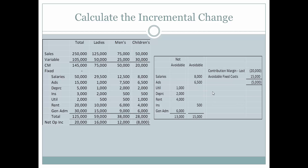To look at this on an incremental basis, we would look at the contribution margin lost. If these sales and the associated variable expenses are eliminated, the contribution margin that would be lost would be $20,000. From that, we can deduct the avoidable fixed costs of $15,000 — that is the salaries, the ads, and the insurance — which total $15,000. This means that by dropping the children's department, we will lose $5,000.